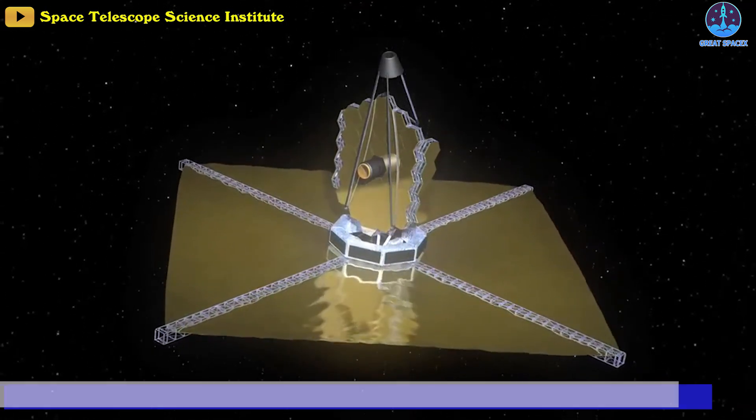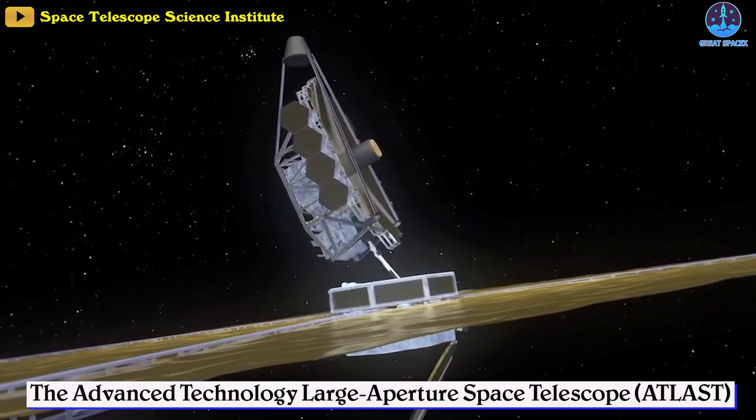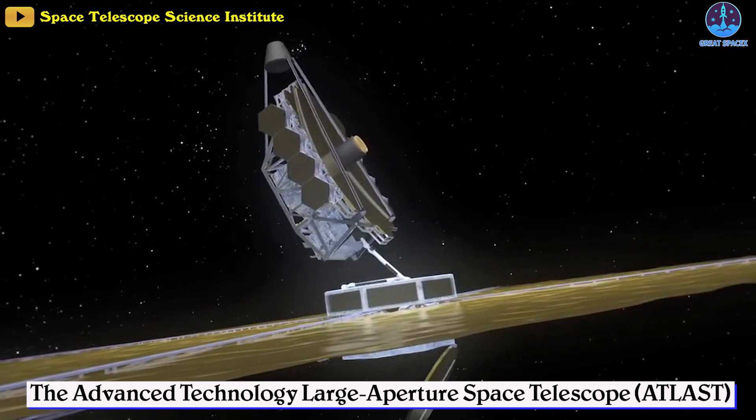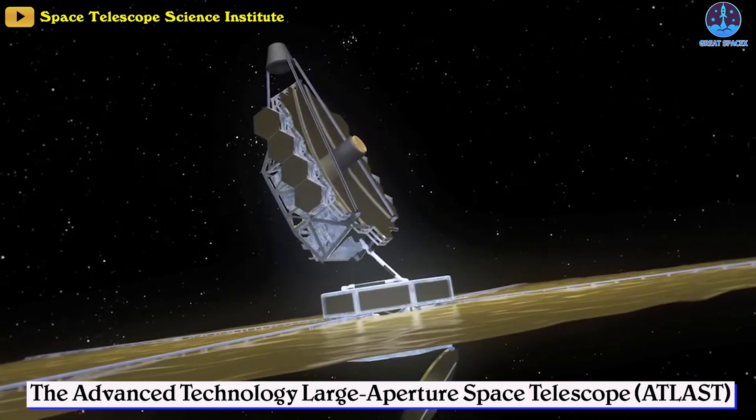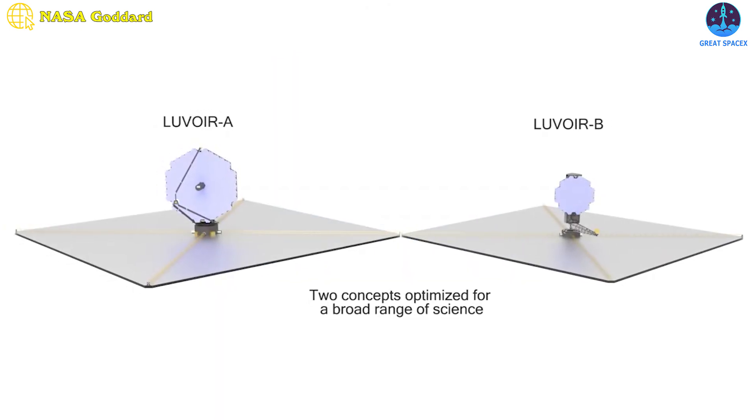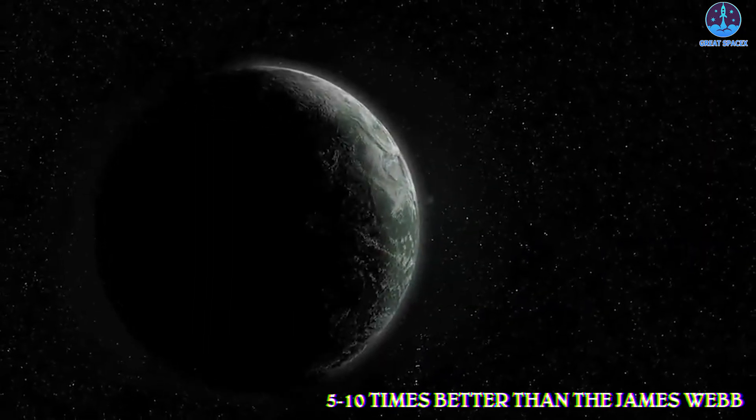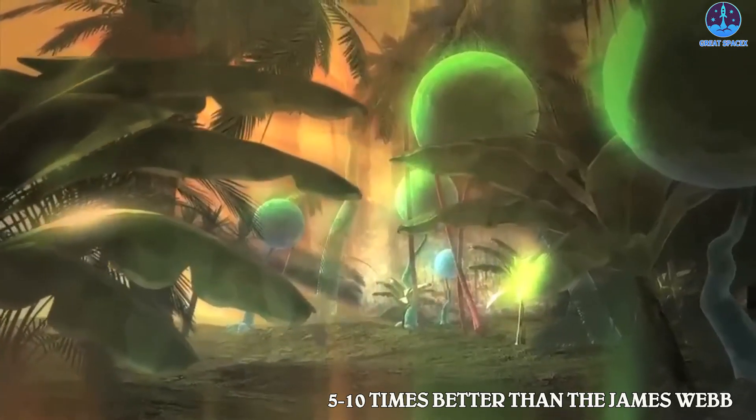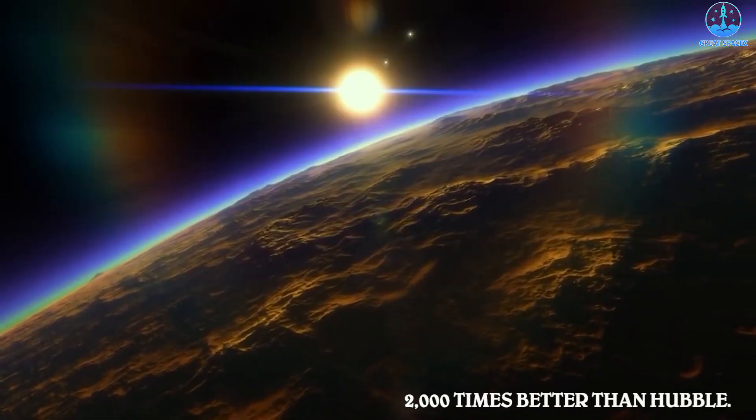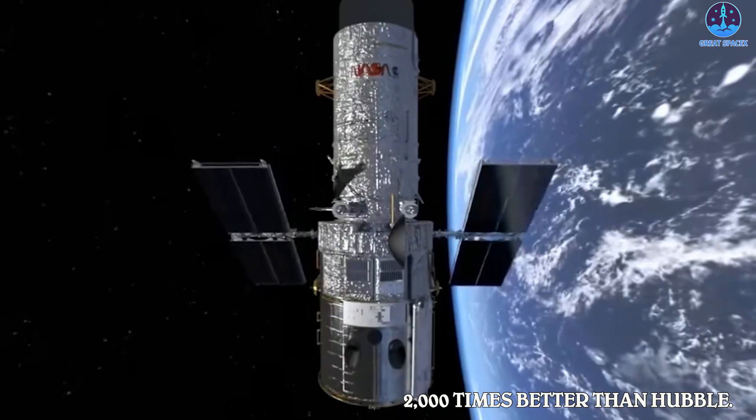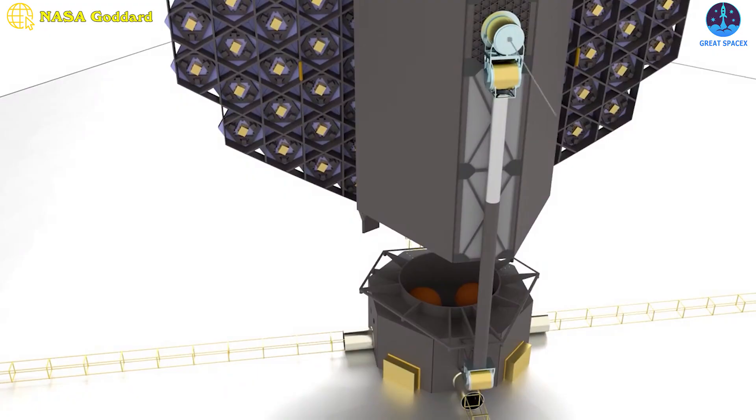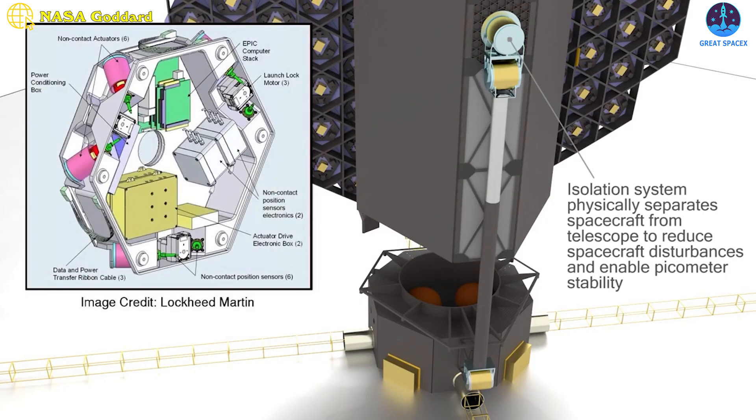LUVOIR A folds so it only needs an 8 meter wide payload fairing. LUVOIR B, previously known as the Advanced Technology Large Aperture Space Telescope or ATLAST, is an 8 meter structure. While smaller than LUVOIR A, it's being designed to produce an angular resolution that is five to ten times better than the James Webb and a sensitivity limit that is up to 2,000 times better than Hubble.